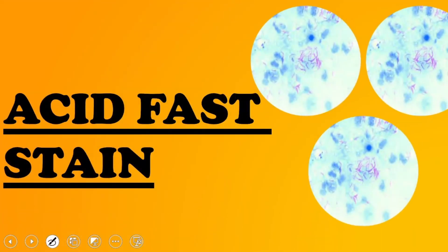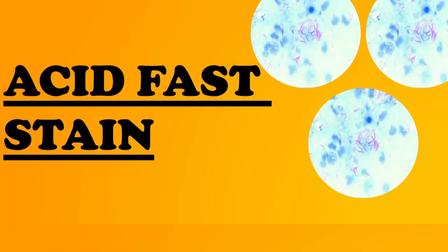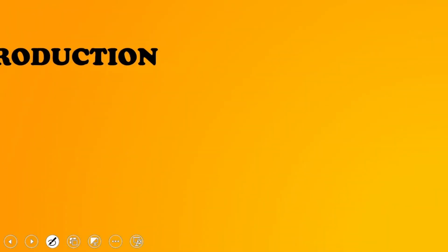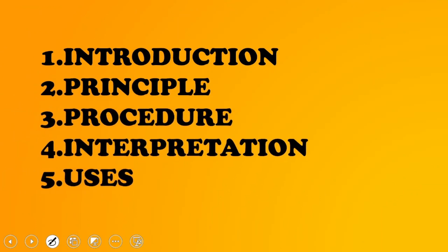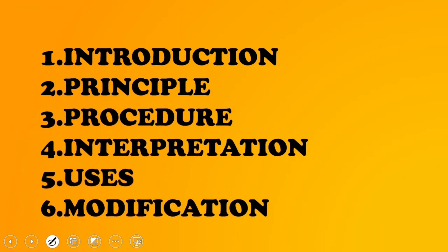Acid-fast staining is the second differential stain to cover. When talking about acid-fast staining, the headings under which it will be described include introduction, principle, procedure, interpretation, uses, modifications, and examples — similar to how gram staining was previously discussed.